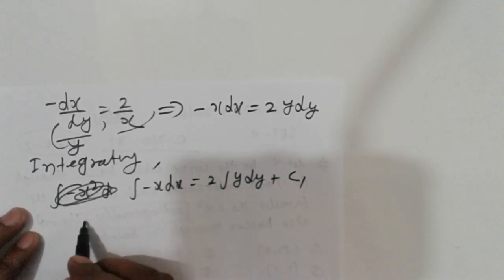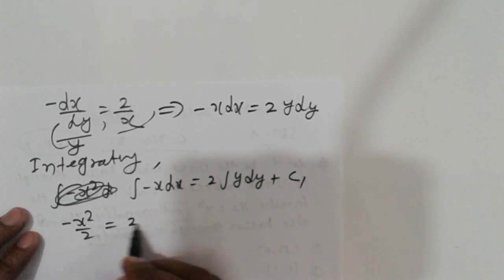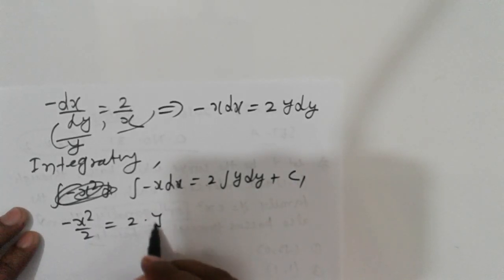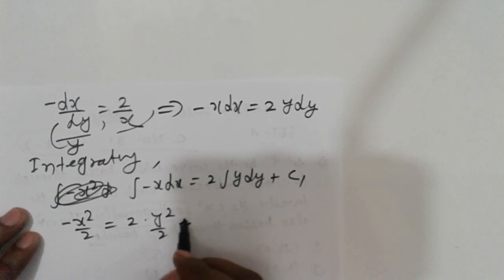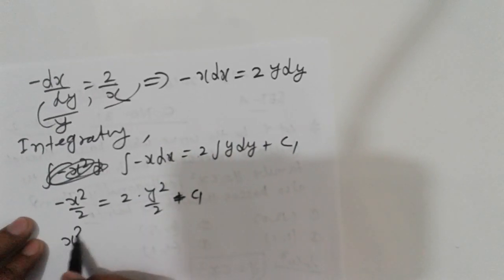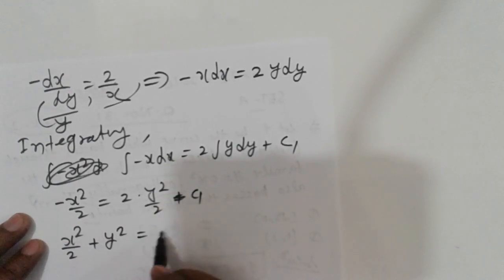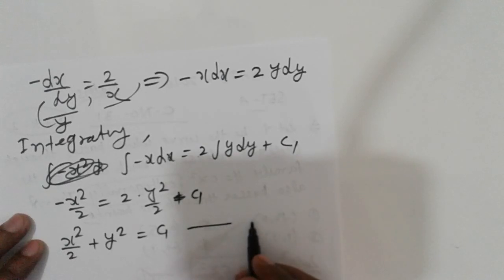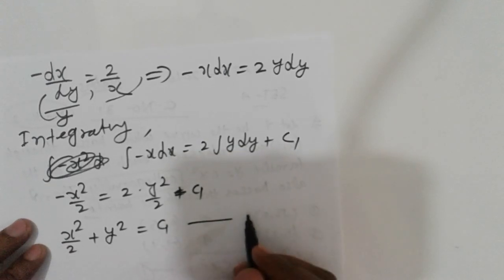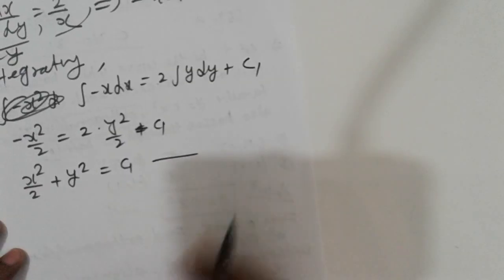Integrating both sides, we get minus x²/2 = 2 times y²/2 plus c1. Simplifying, this gives x²/2 + y² = c1. This is equation number 4.